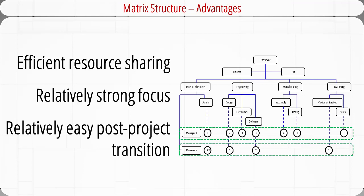There are several advantages of using the matrix structure. First, it encourages resource sharing — resources can be efficiently and flexibly shared across multiple projects, and individuals can divide their energy as needed. Compared to the functional structure, the matrix structure has a relatively strong project focus through a formally designated project manager who coordinates and integrates contributions from different units. Compared to dedicated teams, the matrix structure makes post-project transition relatively easy, as specialists maintain ties with their functional group and have a home to return to once a project is completed.